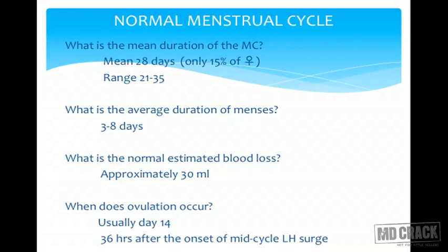What is the mean duration of the menstrual cycle? The mean is 28 days, but only in 15% of females is the cycle actually 28 days. Otherwise the range is 21 to 35 days, and that is quite normal if the cycle is regular every month. The average duration of menses is three to eight days. Normal estimated blood loss is considered as 30 ml throughout the period. Ovulation usually occurs on day 14 of a regular cycle.